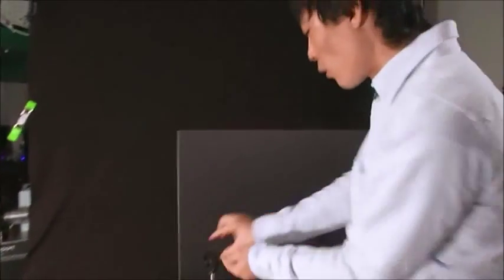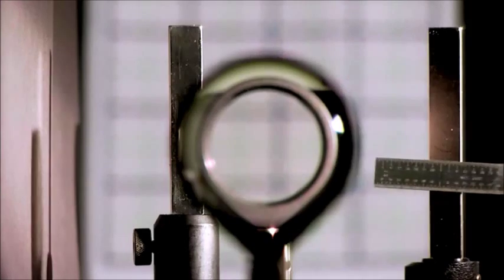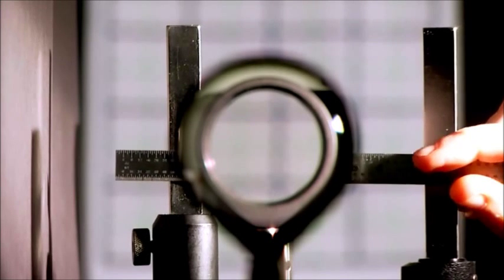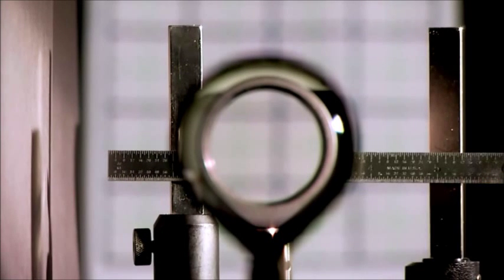So if you were standing right here and you look straight through, what would happen is the rays would focus and then diverge out. So it actually bends the light around the ruler so that you won't be able to see the ruler if you looked at it straight down.